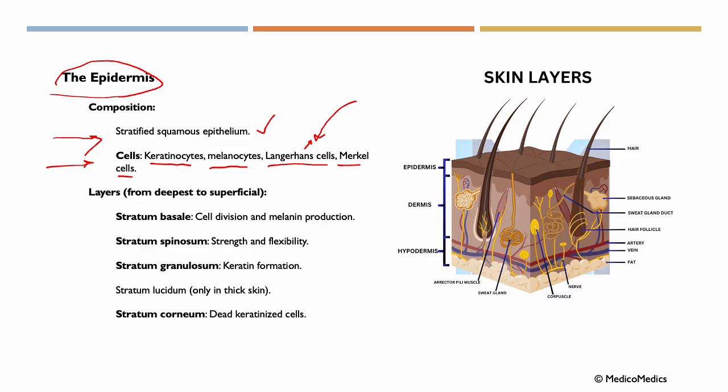Now let's look a bit deeper into the different layers here, from deepest to the most superficial. So again, starting with the stratum basal. It's the bottom layer where cell division occurs. Also, where melanocytes are producing and generating melanin. So that's happening in the stratum basal.